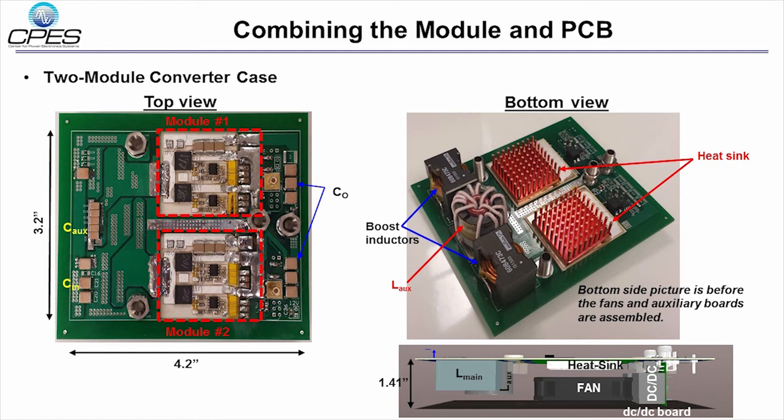This slide shows the shape of the two-module converter fabrication with the thermally enhanced switch modules and PCB. The PCB contains all passive elements such as input and output capacitors, auxiliary inductor capacitor tank, and isolated DC-DC power supply block to power the driver and the controller.